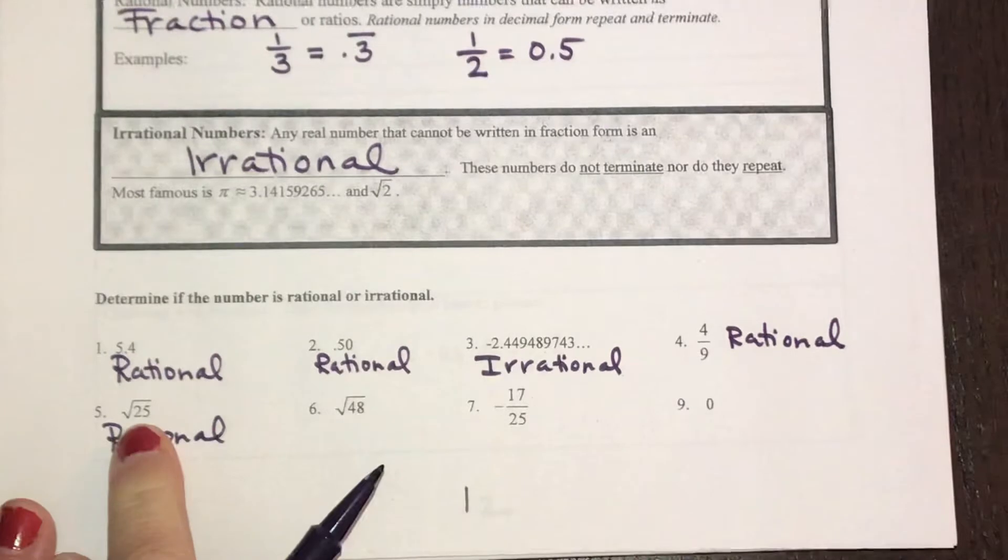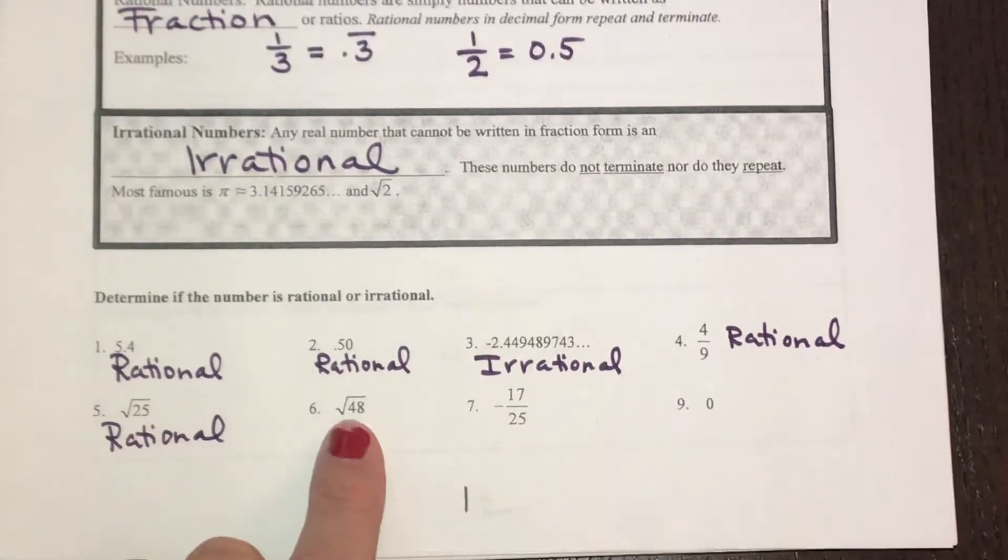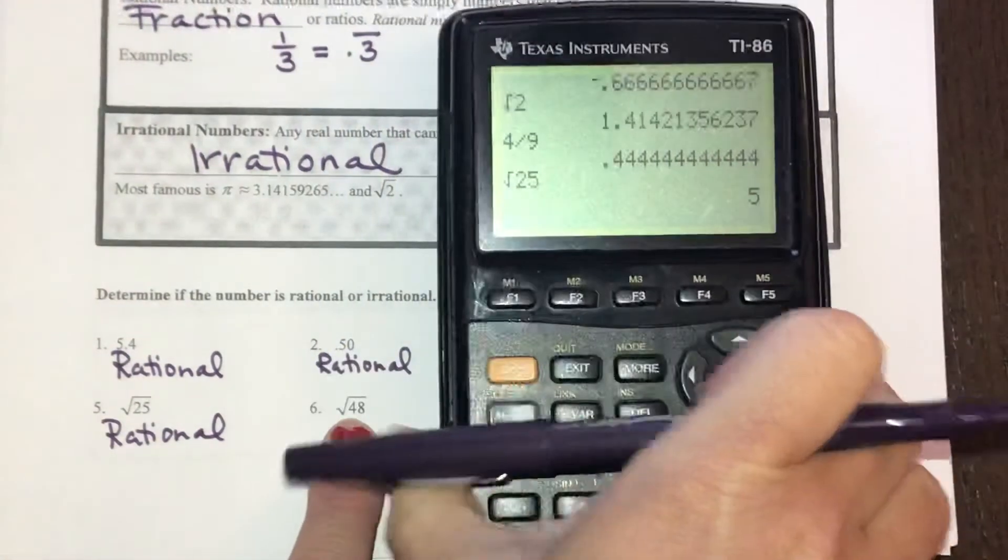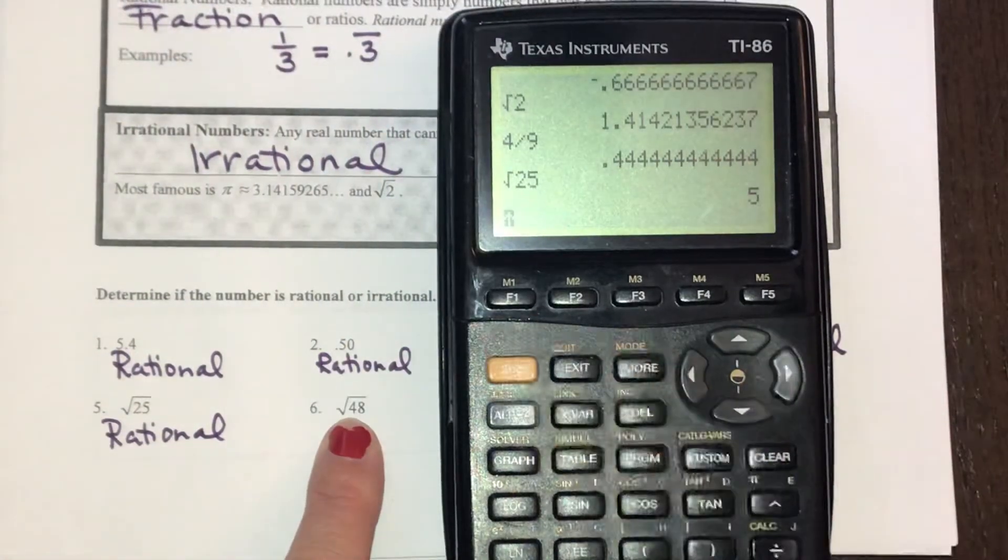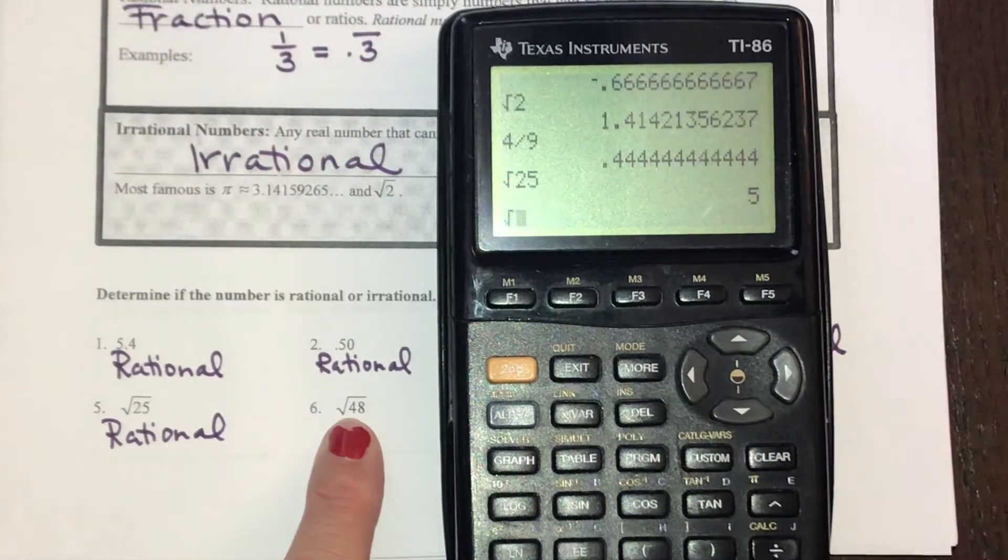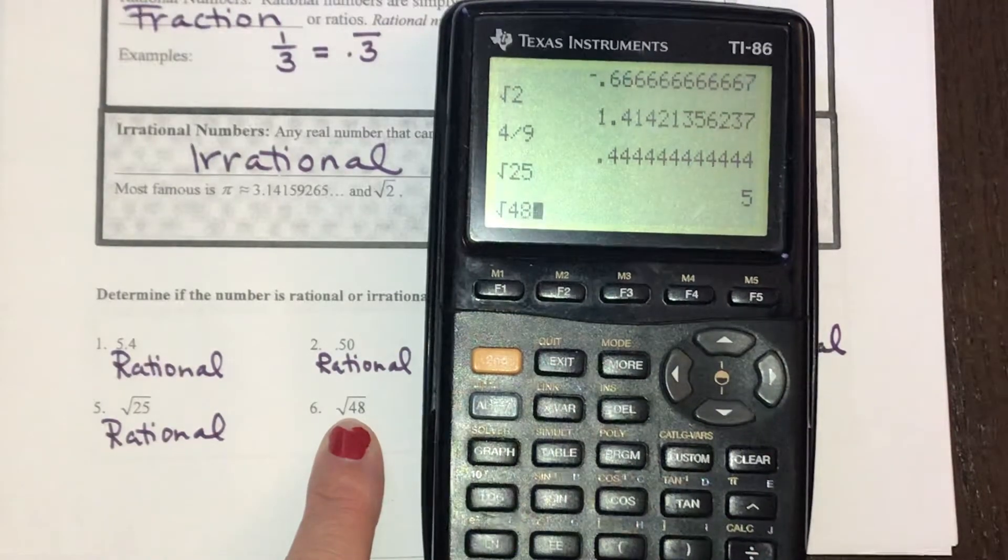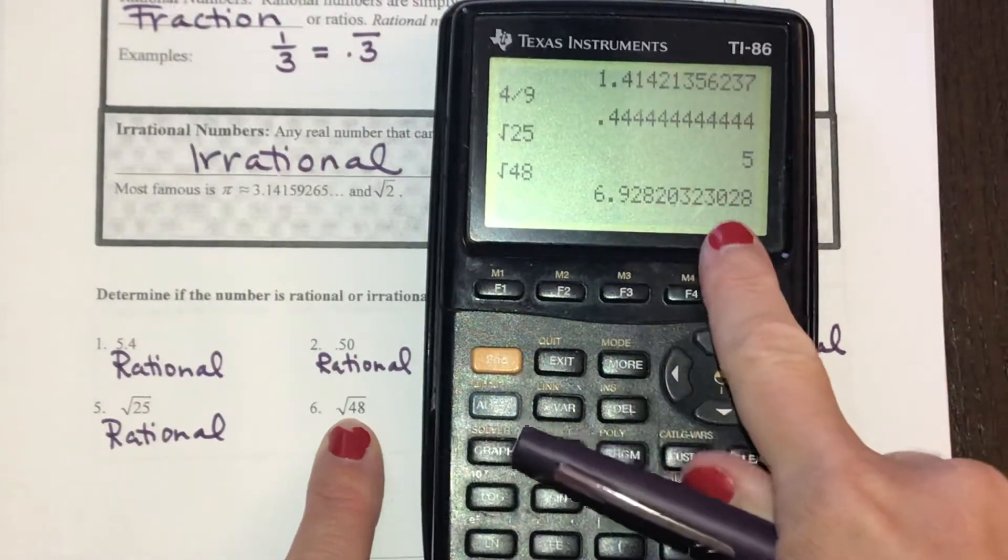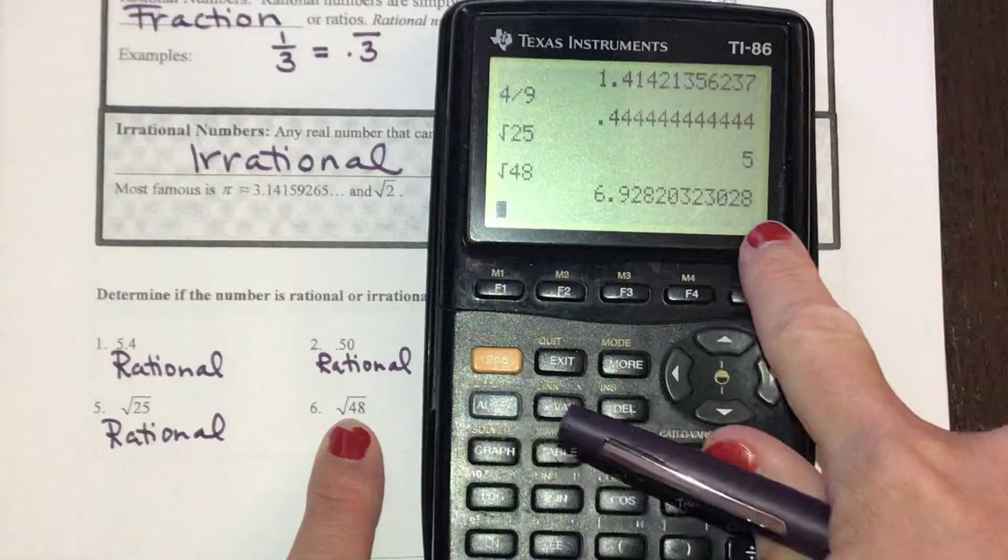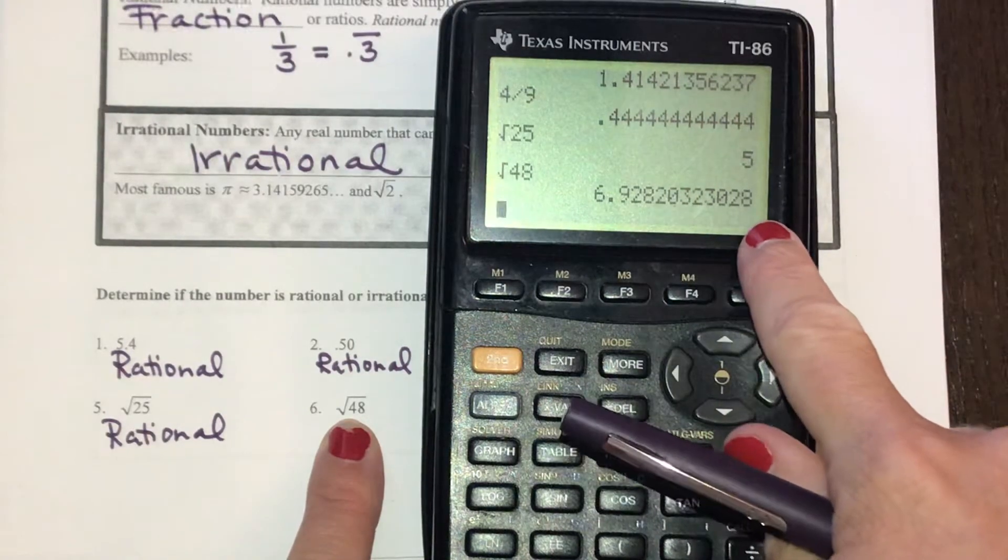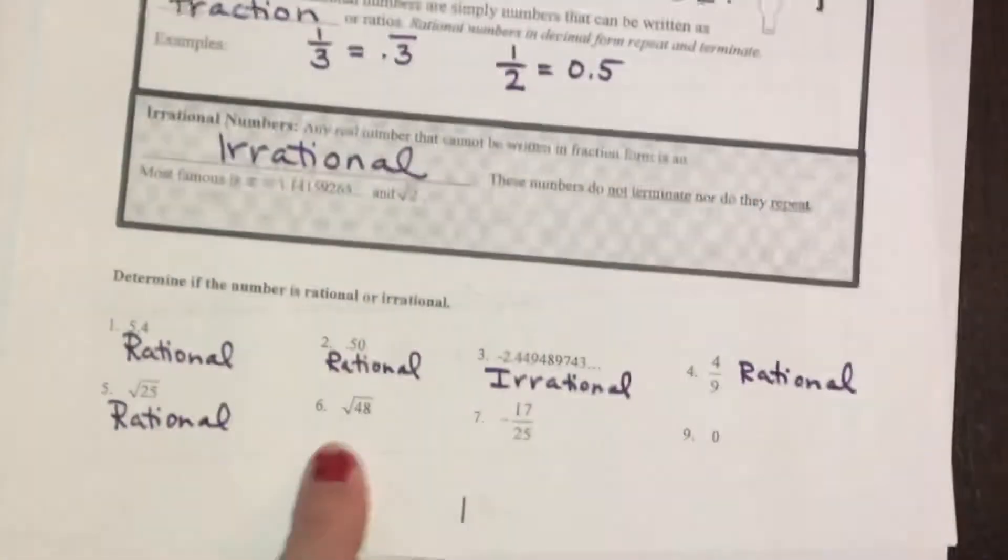Because this is a perfect square, the square root simplifies down. Now the square root of 48, again if you don't know right away, that's okay. Don't hesitate to put it into your calculator and the decimal will tell you. Because this decimal doesn't stop and there is not a repeating pattern, it would be irrational.